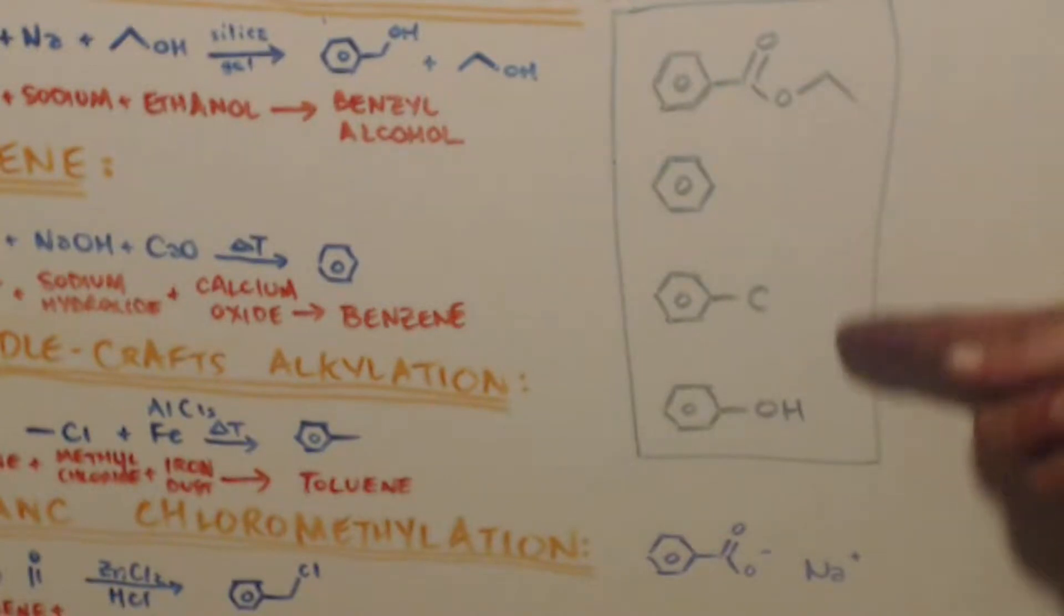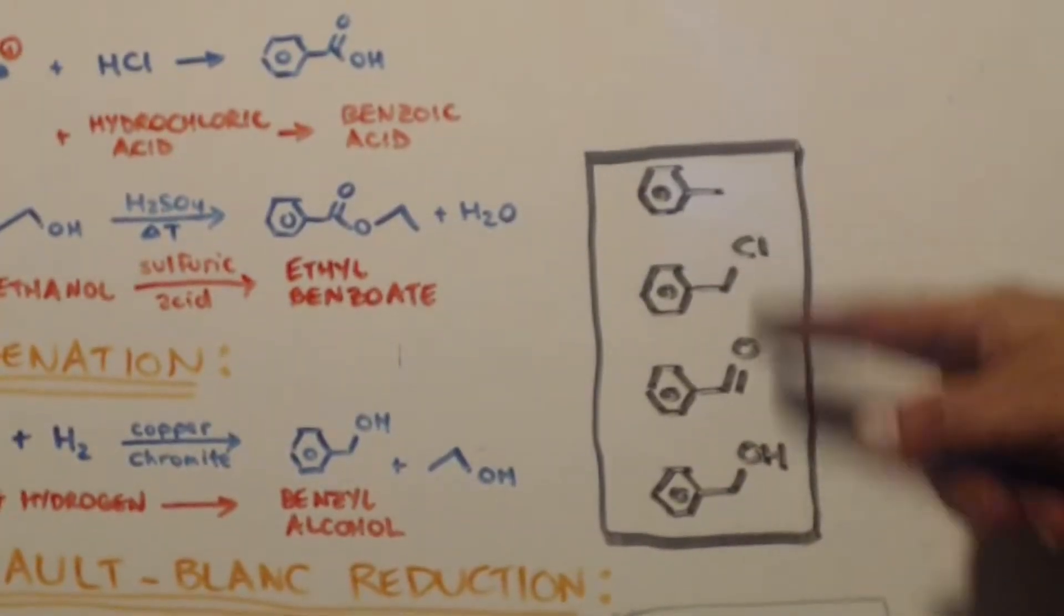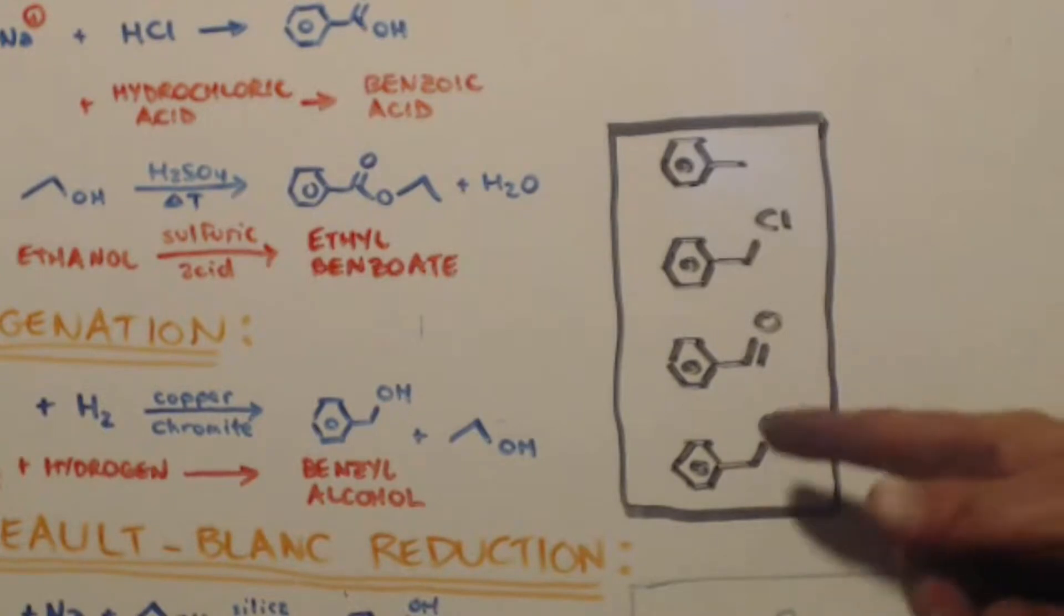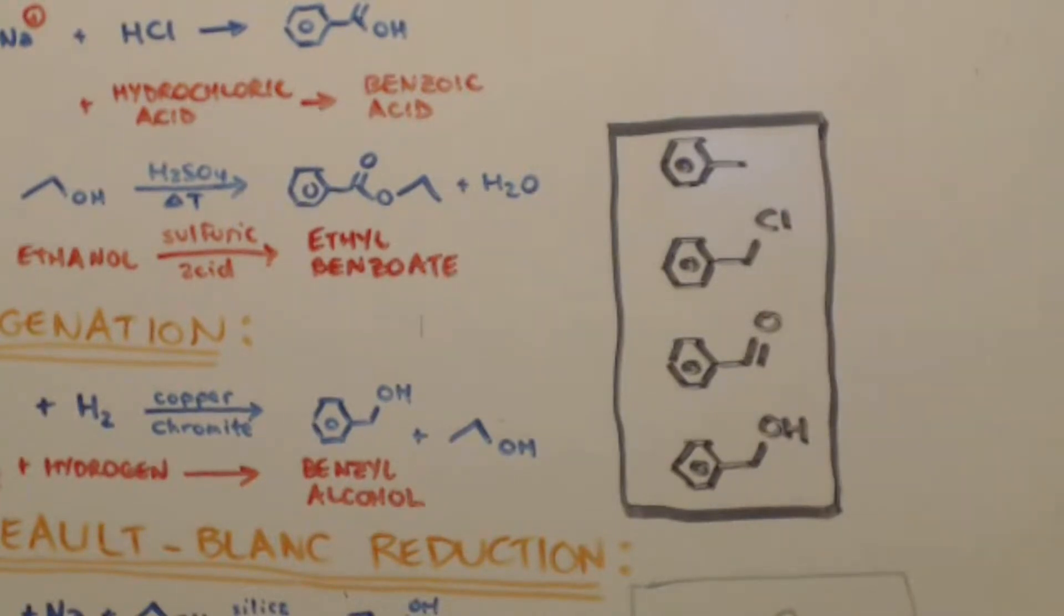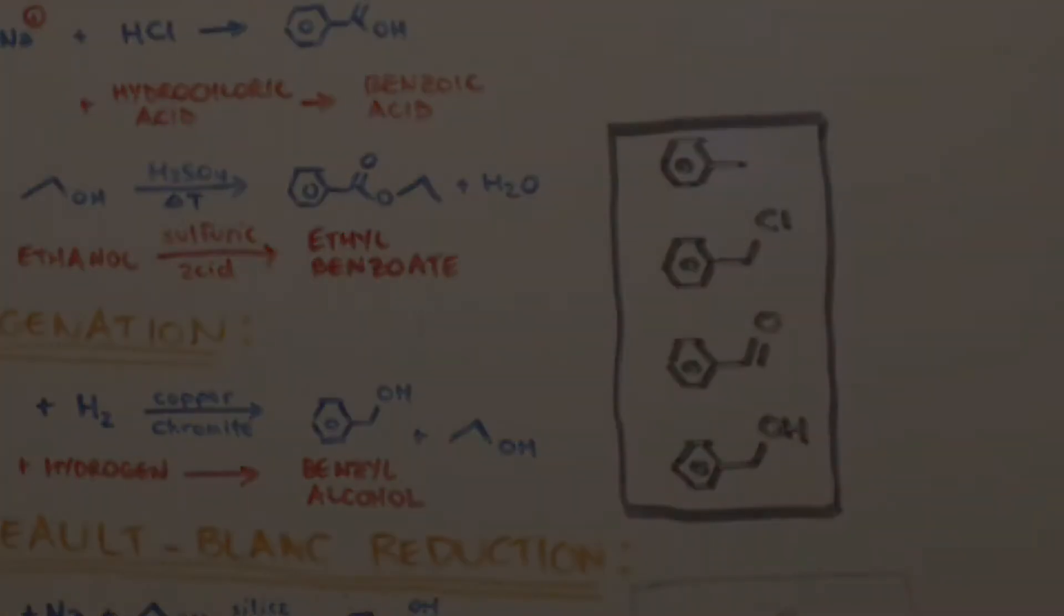These will be the starting materials to make these. Because once you have one of these, you have all of them. If you have toluene, that means you have all three of these. If you have benzyl alcohol, that means you have all of them. If you have one, you have them all. Just like if you have dichromate, you have chromic acid and chromate. It's easy to interchange these back and forth.